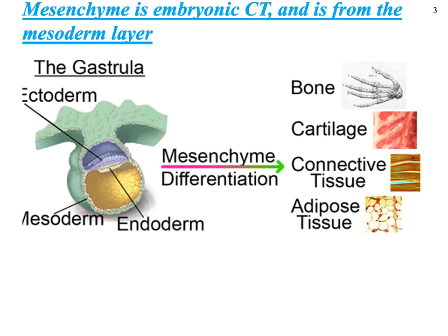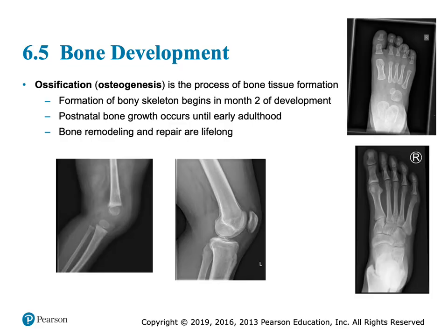Although the mesoderm is going to become different things, the part that is going to be mesenchyme — which is essentially embryonal connective tissue — is going to become the connective tissue parts. Bone develops by a process called ossification. Embryonically, at two months, we're going to start to have bone develop in the embryo — in the uterus.